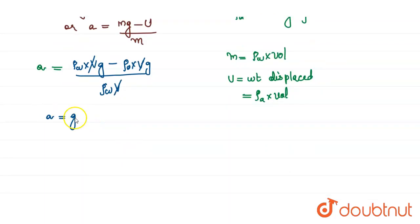We get a equals g times (ρw - ρa)/ρw. We are familiar with all the values. Take g as 10 instead of 9.8, times (1000 - 1.2)/1000.